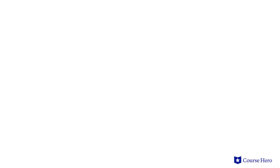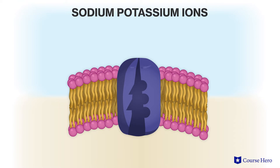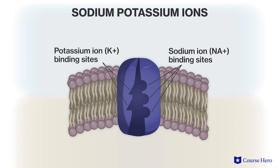The transport protein involved in the sodium-potassium pump has binding sites for three sodium ions and two potassium ions. The protein also has a binding site for ATP. Although the function of the pump is cyclical, the description of how the pump works will begin with the sodium-potassium pump open to the inside of the cell. In this shape, it has a high affinity for sodium ions, and one will bind to each of the binding sites for a total of three.